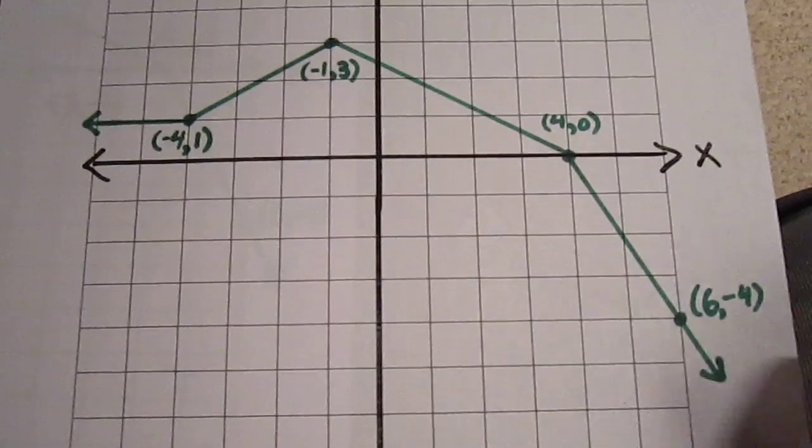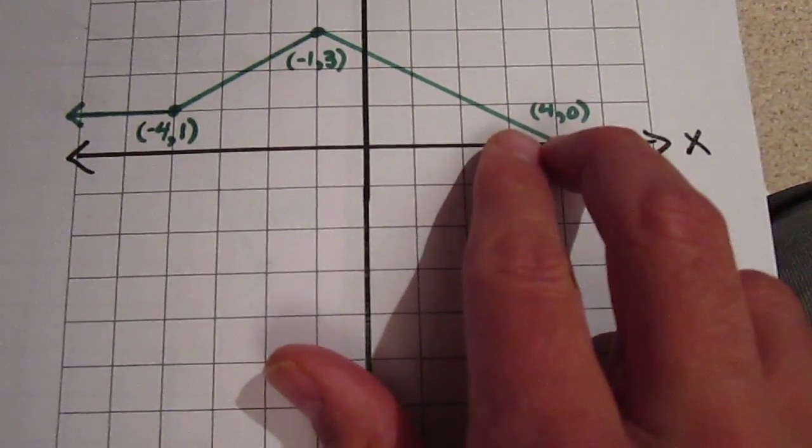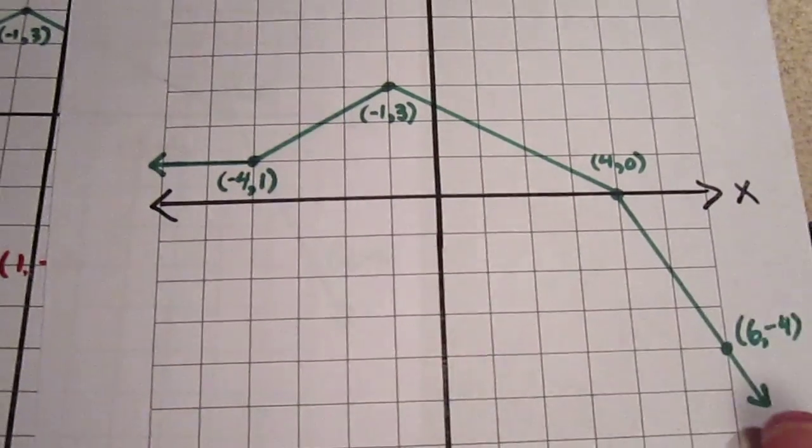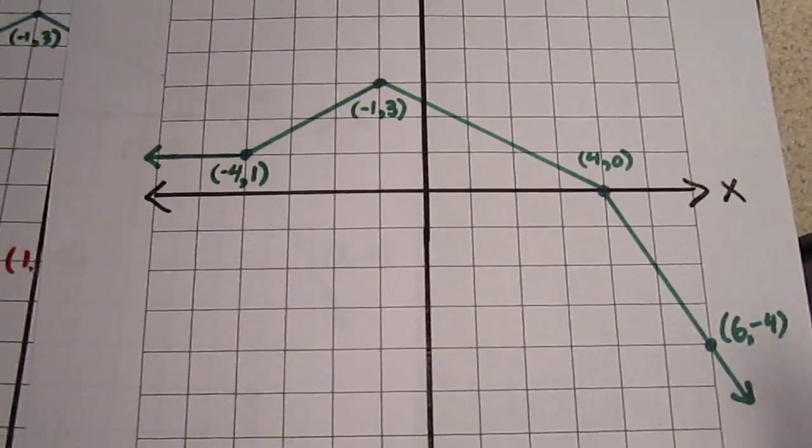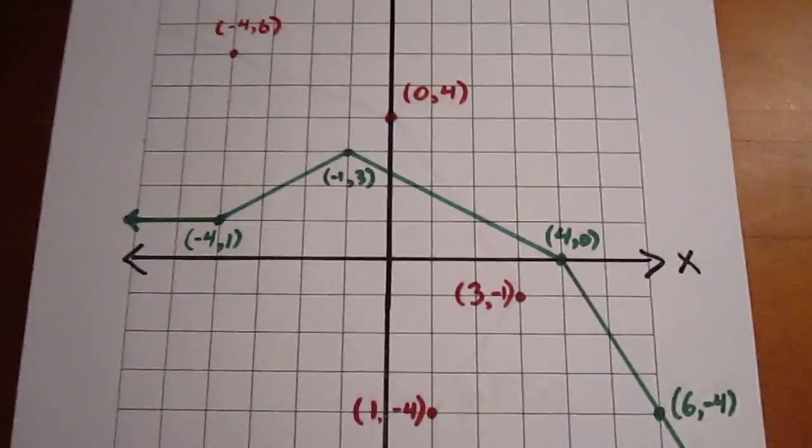So what we're going to do is invert the x and y coordinates on each one of these ordered pairs and graph the corresponding inverse points, and this is what we have when we do that.